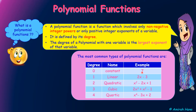This is the example for constant, which is degree 0. This is the example for linear, which is degree 1. This is the example for quadratic, which is a polynomial with degree 2. This is the example for cubic, which is a polynomial with degree 3. And this is the example for quartic polynomial function, which is degree 4.